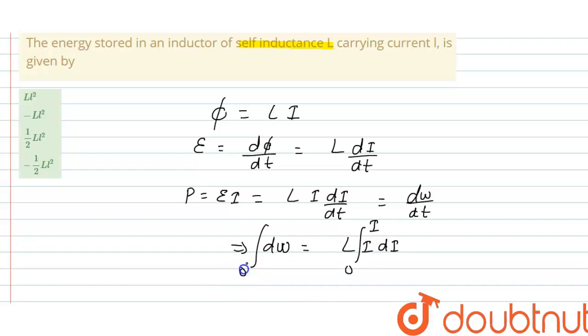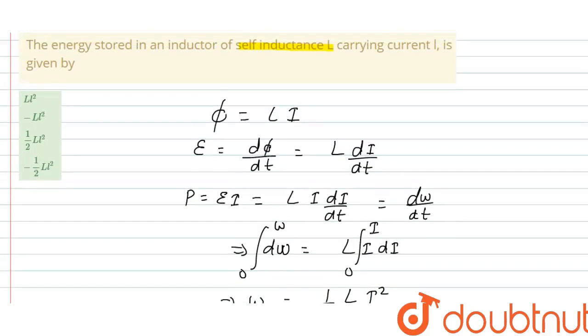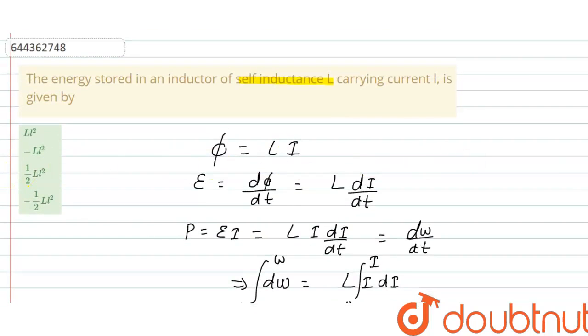...will be equals to 0 to W, from 0 to W, then this will be equals to W and right side will be equals to Li di, integration is i²/2, so this will be equals to 1/2 Li². And this total work done will store in form of energy inside inductor, so total energy stored inside inductor is half Li². So correct option is half Li². I hope you have understood this explanation, thank you.